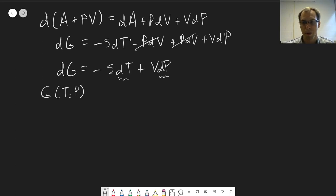Our differential terms here are temperature and pressure, and so those are our natural variables to consider for the Gibbs energy. And we can do the same thing. We can derive relationships here.